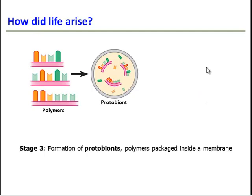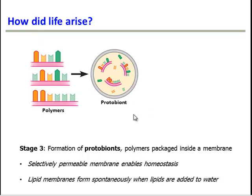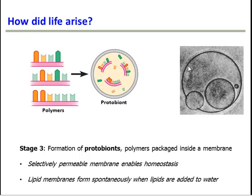Stage 3 is a pretty cool stage. Those organic polymers — like carbohydrates, nucleic acids, and proteins — become packaged inside membranes, likely composed of lipids. We call this package of a membrane with molecules inside a protobiont: proto meaning before, and bio meaning life. So these are like pre-cells — not quite cells, but getting pretty close. This membrane was important because now homeostasis becomes a possibility, as the membrane separates the molecules from their environment. Interestingly, if you drop lipids in water, because they're hydrophobic they will spontaneously form a membrane — so it's not hard to imagine this happening. Here you can see a picture of a real protobiont, something you'll hopefully be creating in lab later this week.